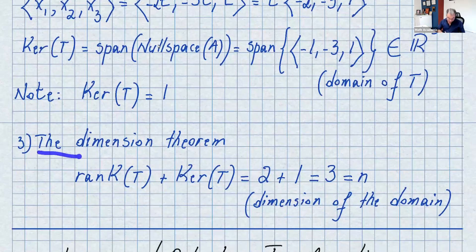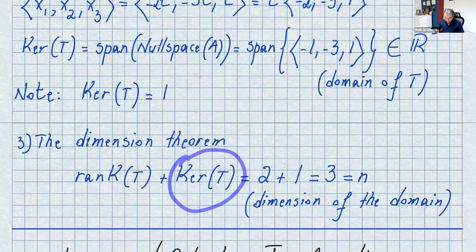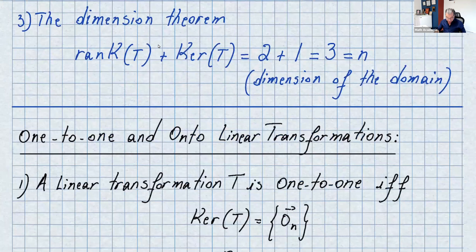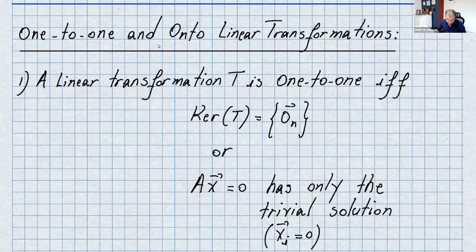Applying the dimension theorem: rank(T) = 2 (dimension of column space) plus nullity(T) = 1 (dimension of null space) equals 3, which is n, the dimension of the domain R3. This confirms the theorem.